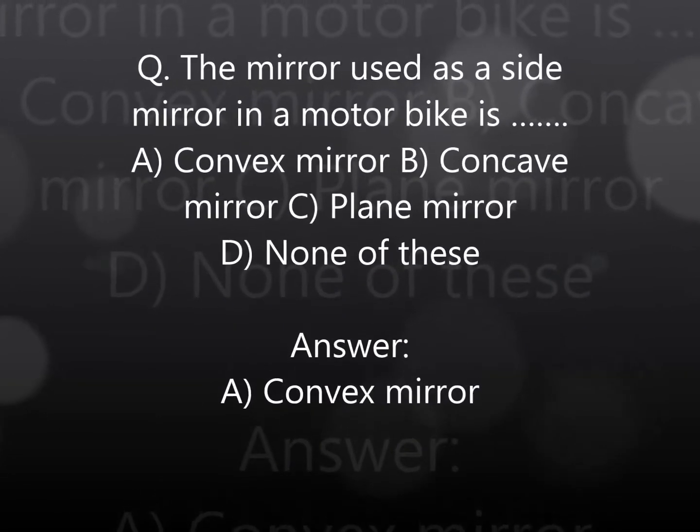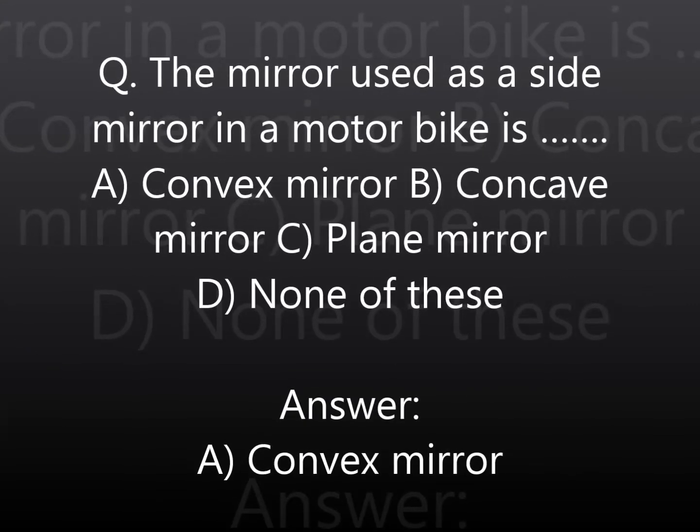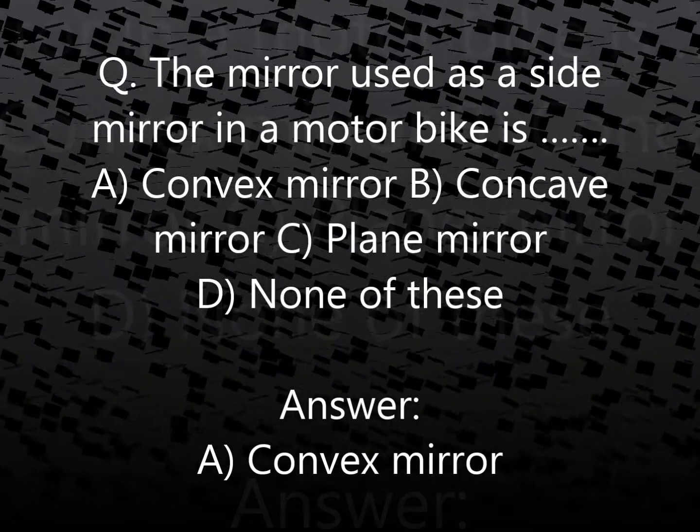The mirror used as a side mirror in a motorbike is: A. Convex mirror, B. Concave mirror, C. Plane mirror, D. None of these. Answer: A. Convex mirror.